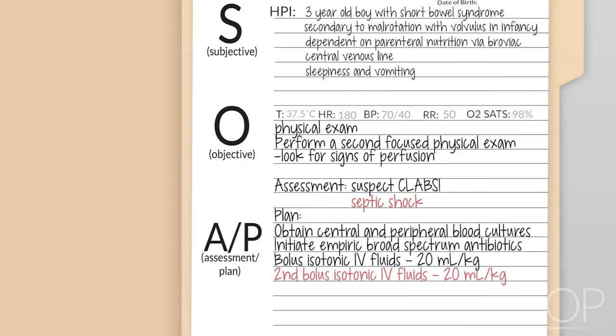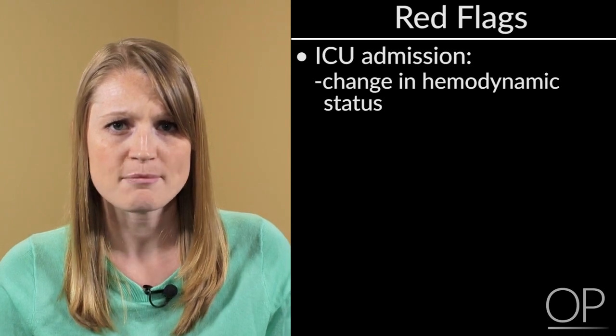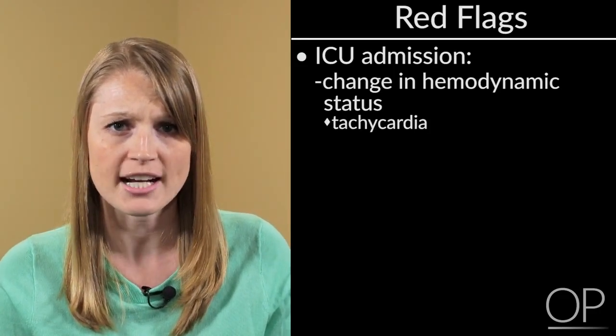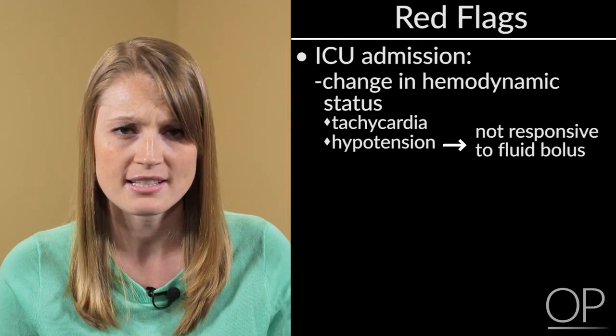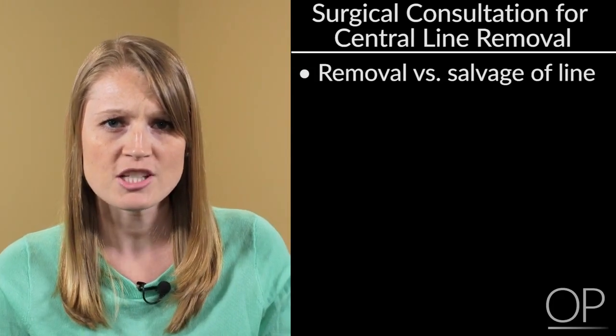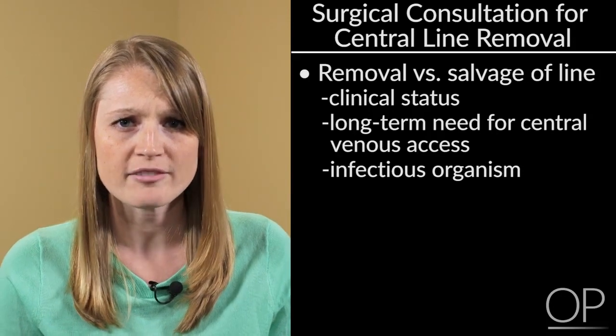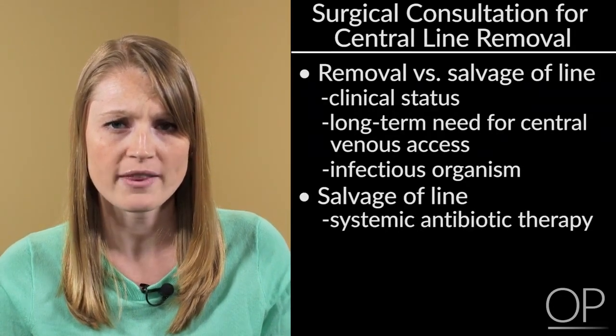You decide to bolus another 20 cc per kilogram of isotonic fluids. You call for an ICU consult and admission, and you call for a surgical consult. The red flags to prompt ICU admission and surgical consultation for central venous catheter removal include a sudden change in hemodynamic status. Note that this may or may not be associated with accessing the central venous catheter and infusing intravenous antibiotics. Other red flags include tachycardia or hypotension that is unresponsive to an intravenous fluid bolus, or respiratory distress or hypoxemia. Further treatment considerations in patients with central line associated bloodstream infections are removal versus salvage of the line. This should be determined by the patient's clinical status, long-term need for central venous access, as well as the infectious organism. Whenever a line is salvaged, systemic antibiotic therapy along with antibiotic lock therapy is recommended.